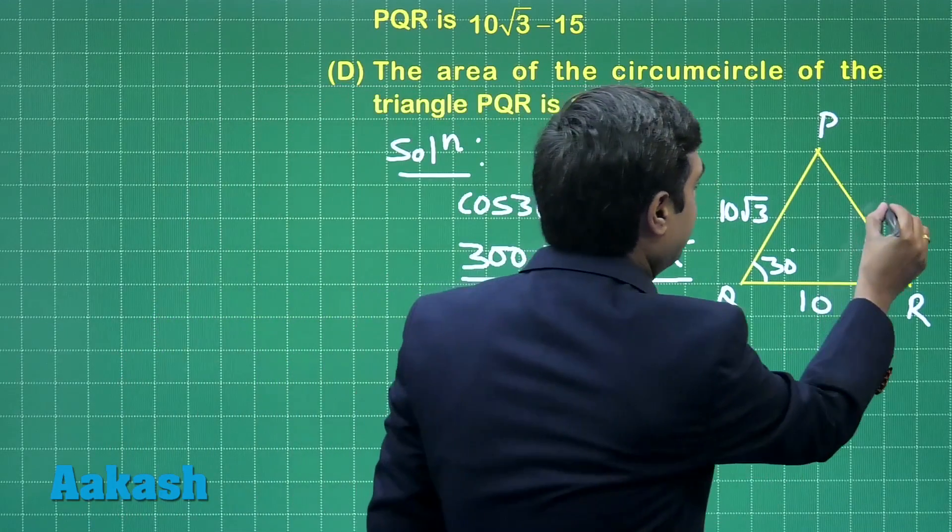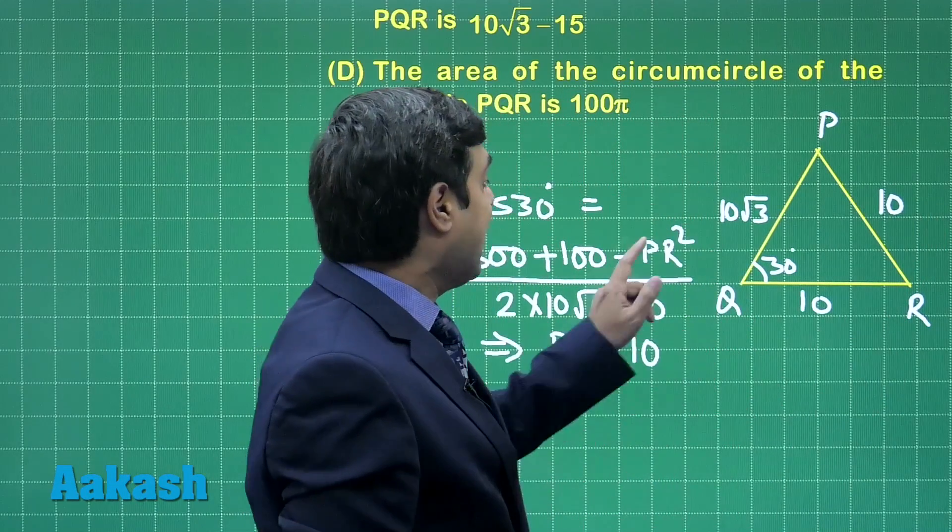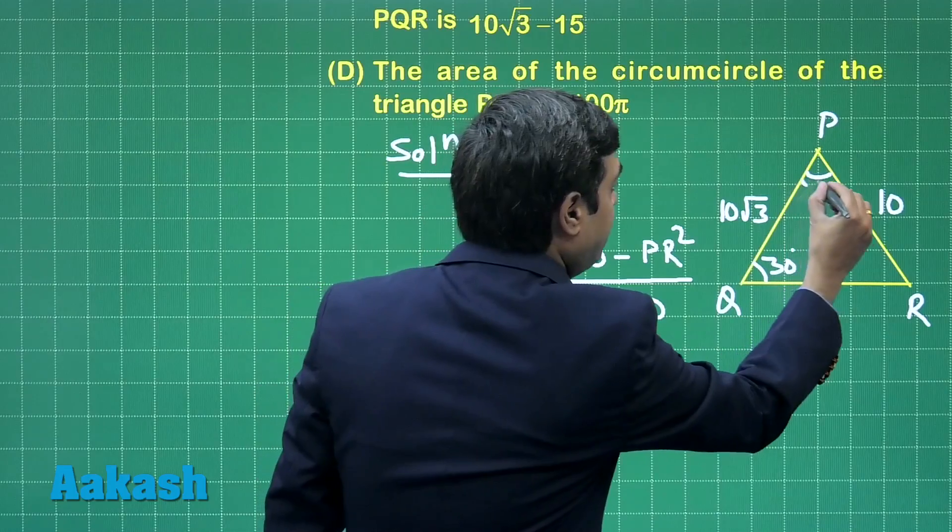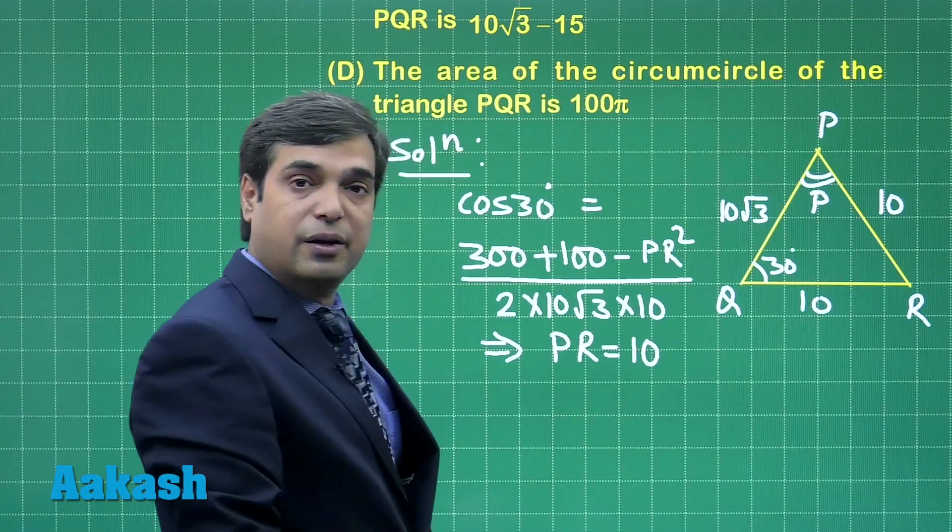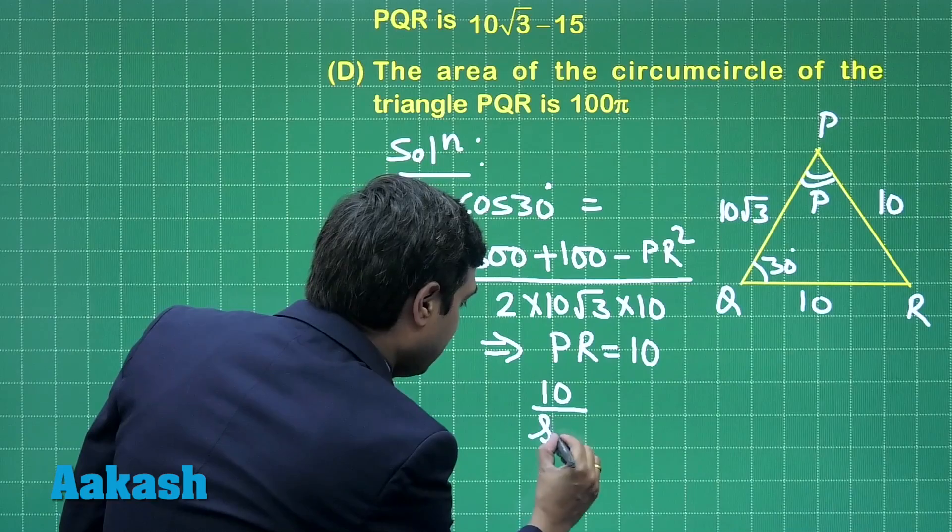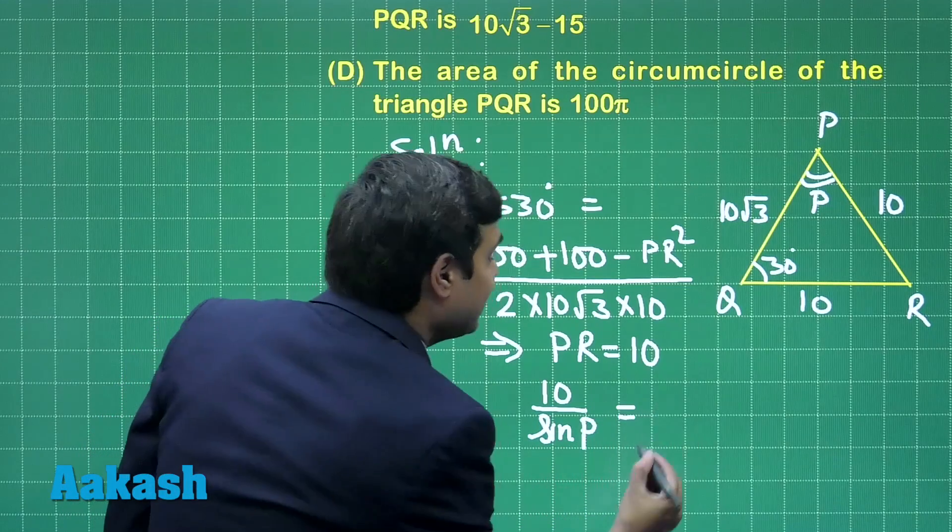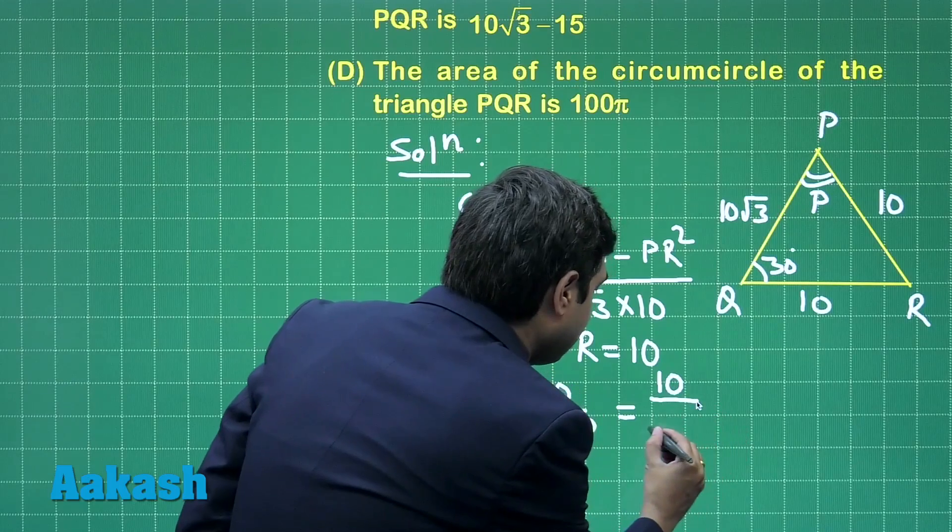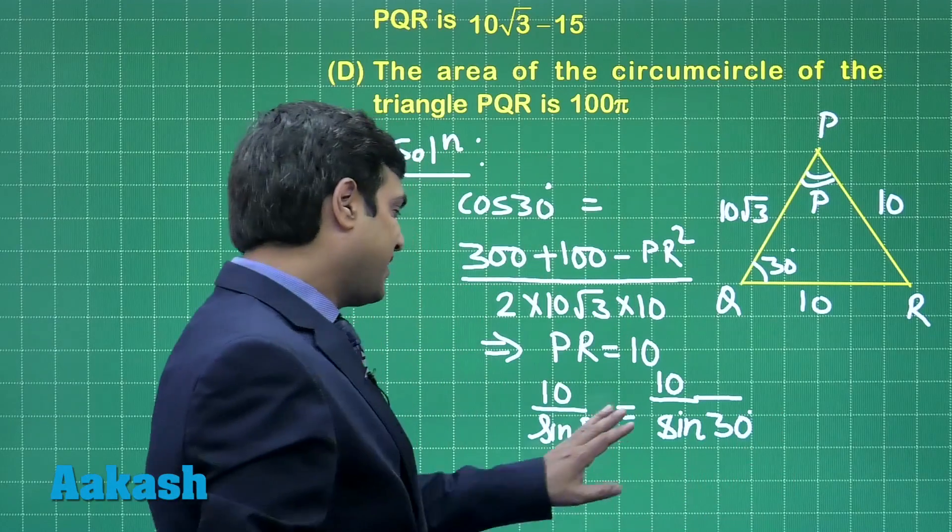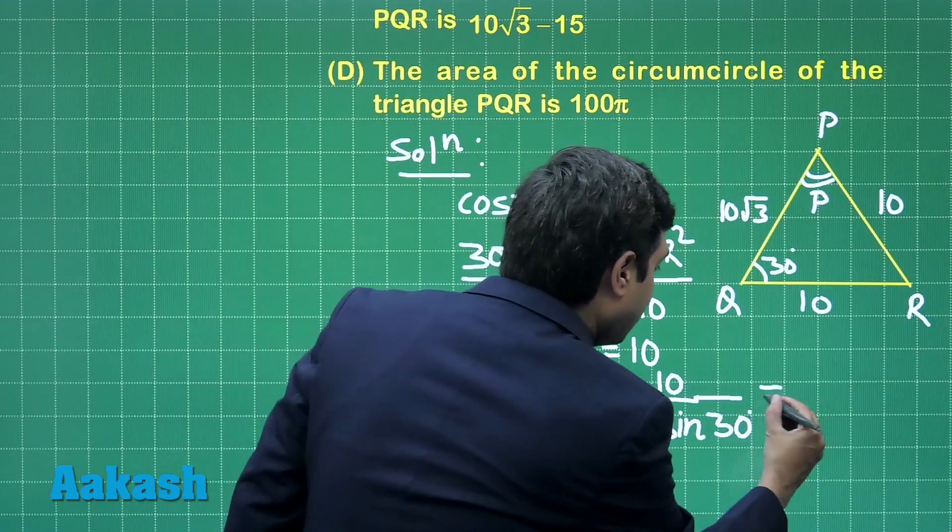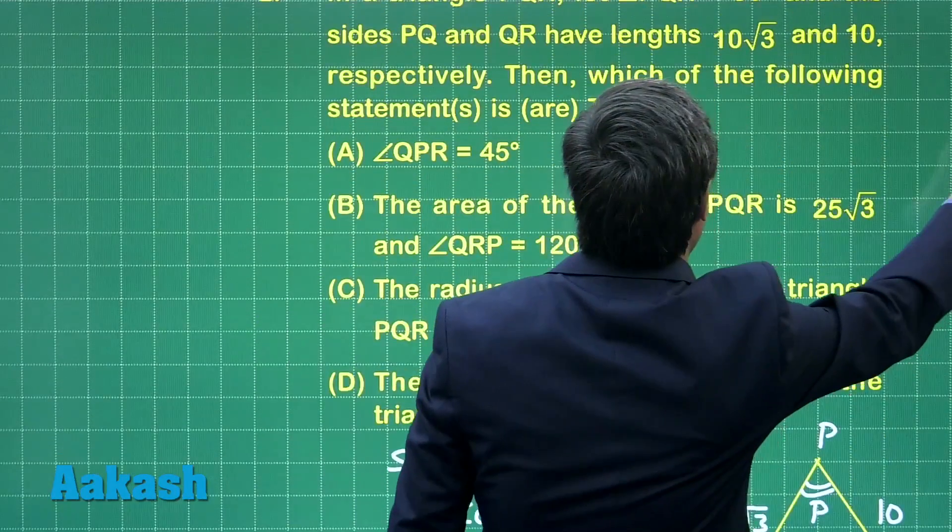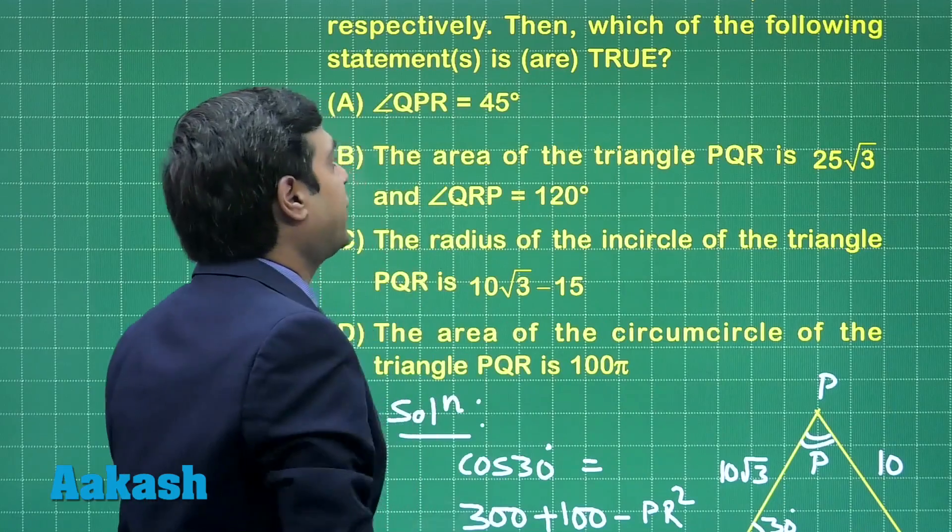This length comes as 10 units. When we obtain this value we can find angle QPR as required in this question. Angle QPR, this one, let us consider this angle as P. Using sine rule we can say 10 upon sine P is equal to 10 upon sine 30 degrees. This gives us sine P equals sine 30, that is P comes as angle 30 degrees, correct. Now the first option was the angle is 45 degrees, so this is wrong.